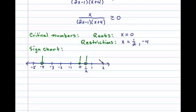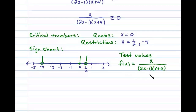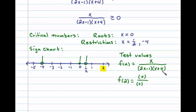We need to test whether the rational expression is positive or negative in each region. I'll choose x equals 2 as my first test value. Plugging in 2, the numerator gives a positive factor. In the denominator, 2 times 2 is 4 minus 1 is 3, a positive factor; and 2 plus 4 is 6, also positive. A positive divided by two positive factors gives a positive result for this interval.